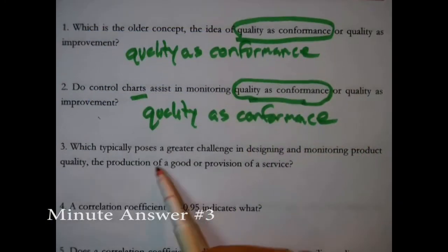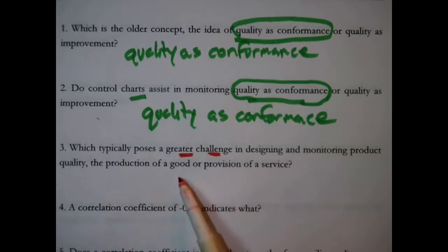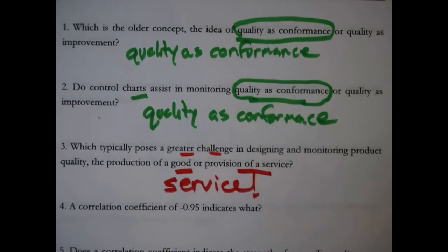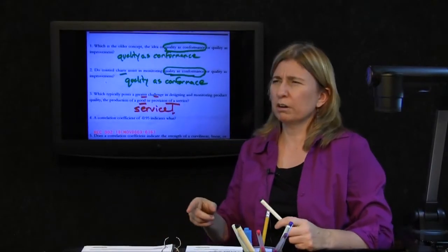Which typically poses a greater challenge in designing and monitoring product quality, production of a good or provision of a service? Important principle. Provision of a service. You say, why?